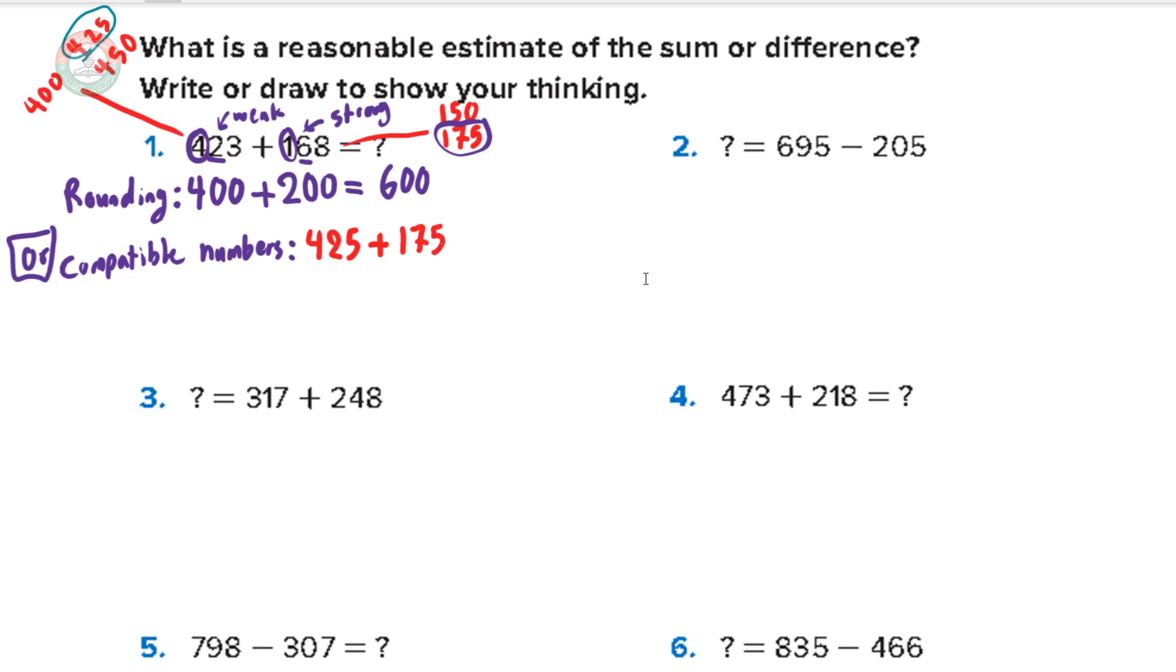And that will be equal to 25 plus 75 is 100. And 400 plus 100 is 500. So the total will be 600. So this is using compatible numbers.